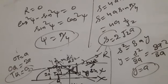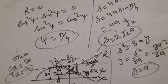Thus the particle leaves the cycloid and falls through half of the vertical height of the cycloid — which is what we had to show.